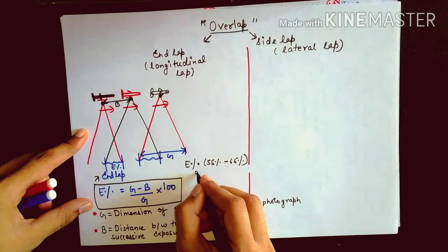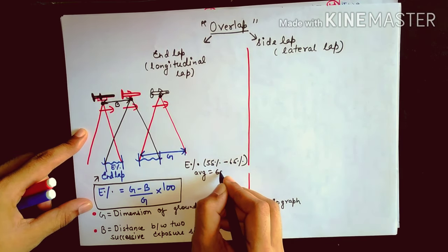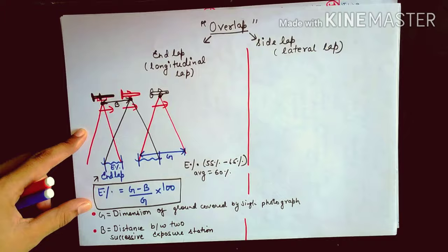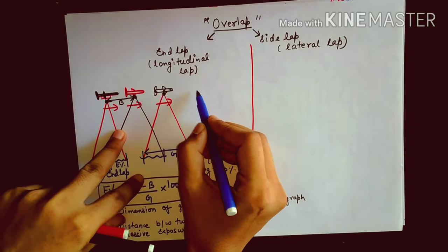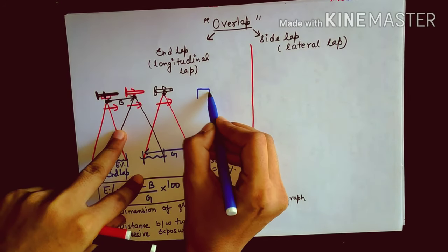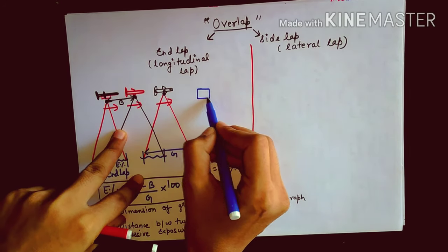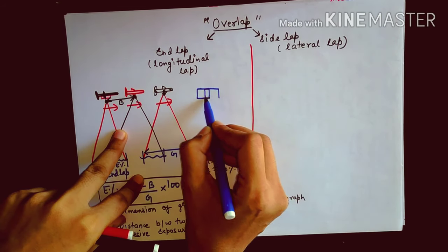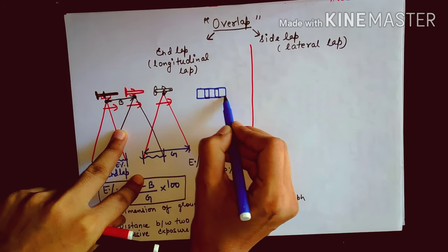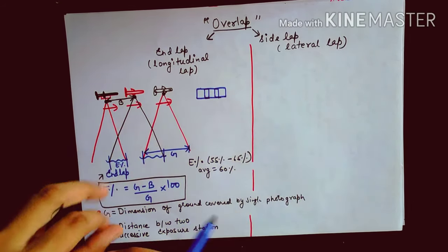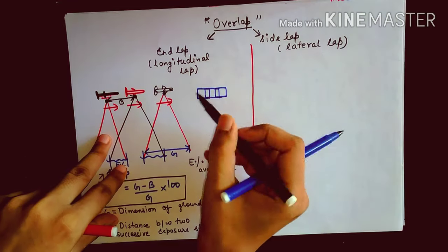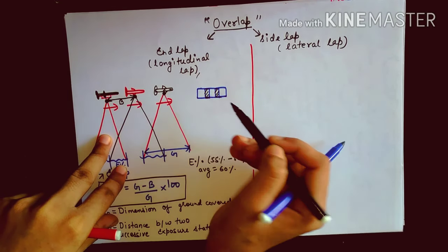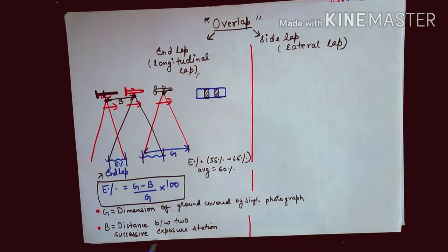The E% range is between 55% to 65%, and the average value taken is 60%. In the photograph sequence, the common area shared by the first, second, and third photographs is called the end lap.